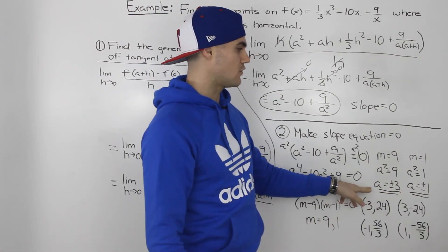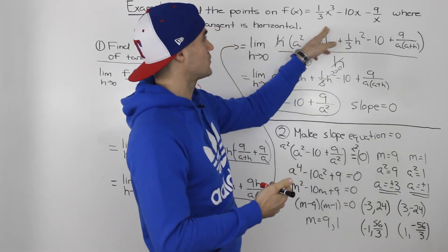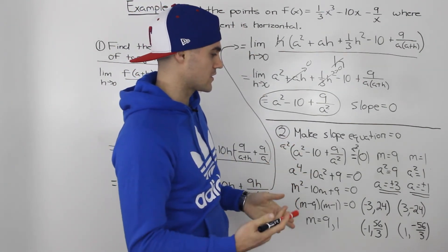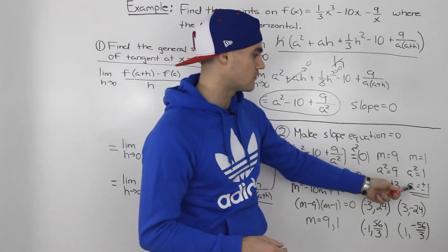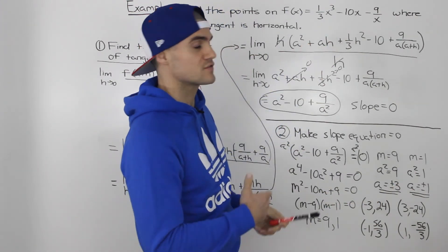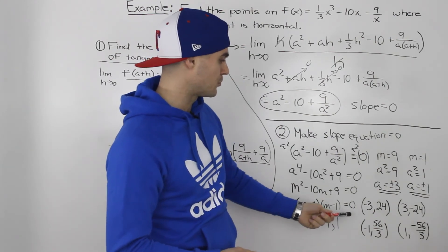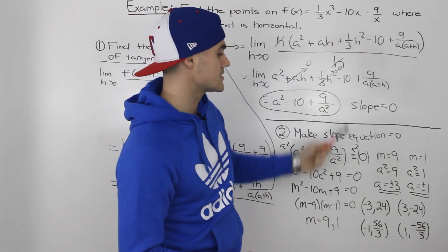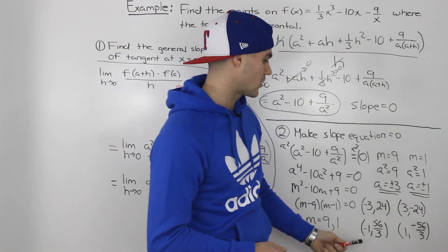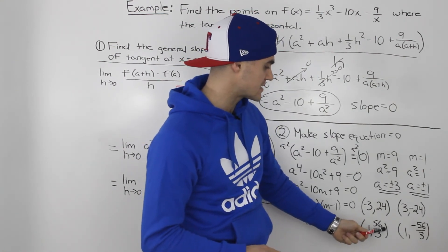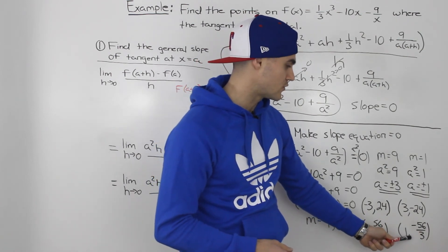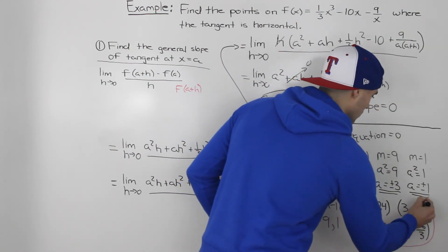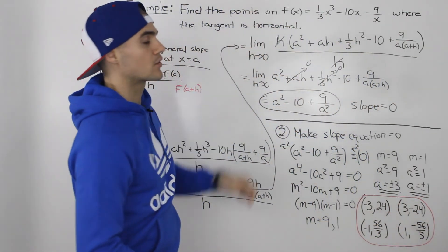Those a values are the x-coordinates where the tangent is horizontal, but the question asks for the actual points, so we need the y-values too. Plugging each value into the original function, the four points are (−3, 24), (3, −24), (−1, 56/3), and (1, −56/3). These four points are the final answer.